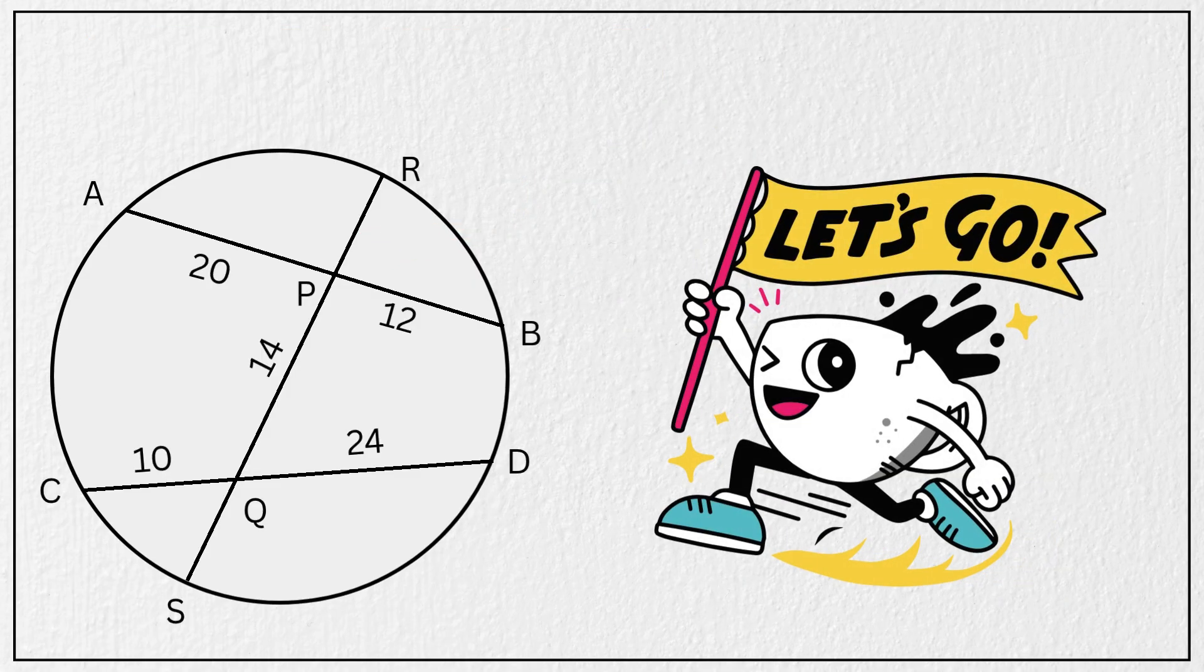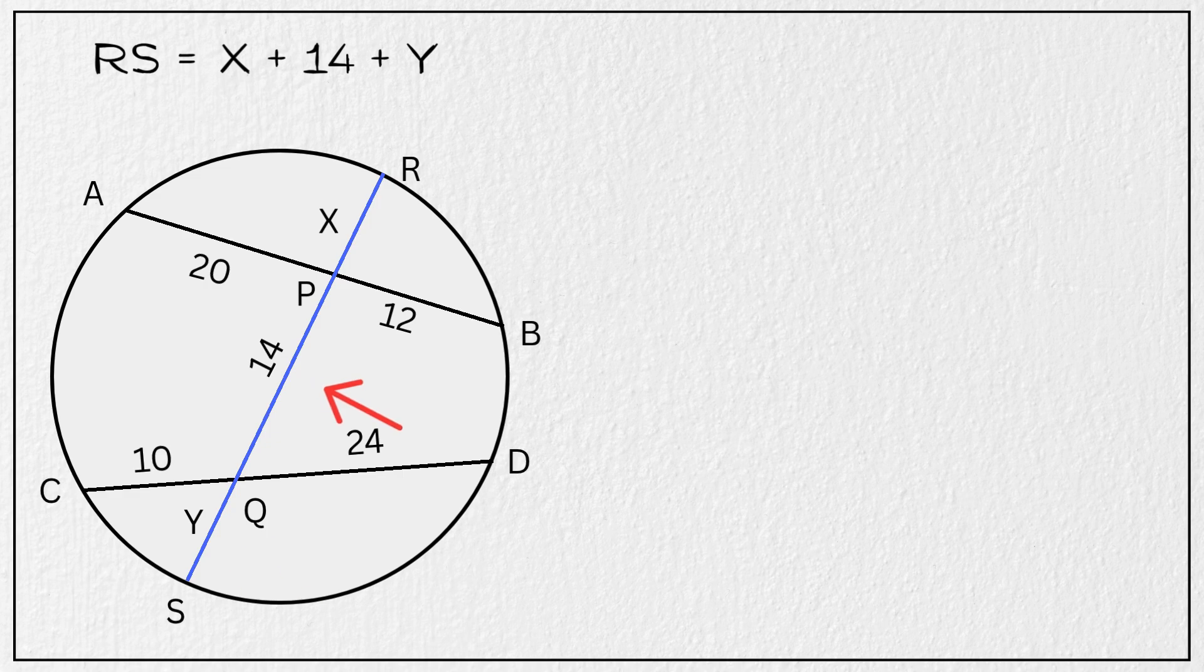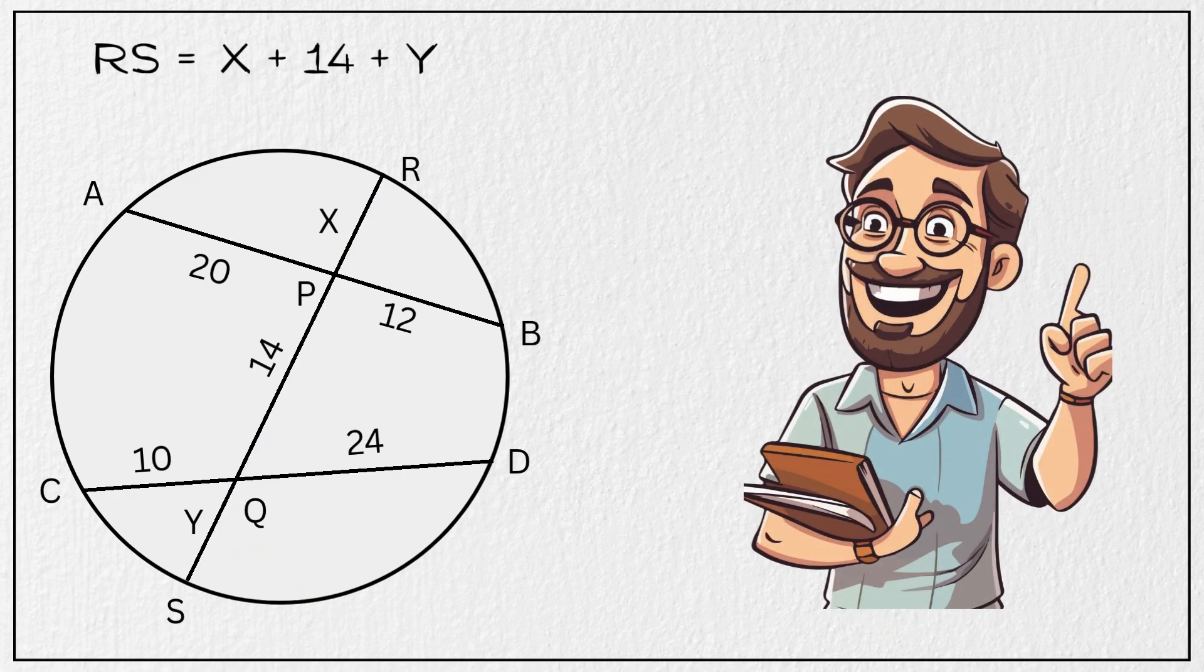Alright, let us solve this together. But before we begin, let's mark these two unknown lengths. Let's call the length from point R to point P as X, and the length from point Q to point S as Y. So now, the length of our chord RS will simply be equal to X plus 14 plus Y, correct? Now here's the interesting part.